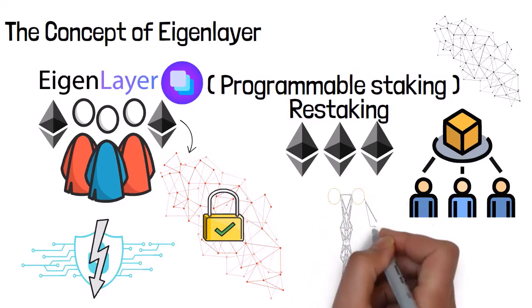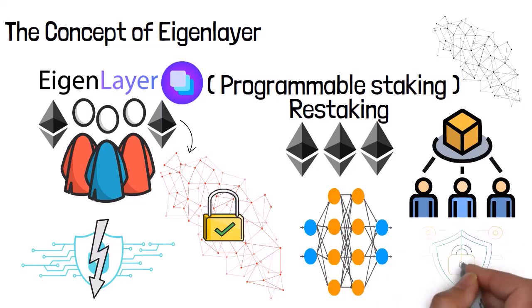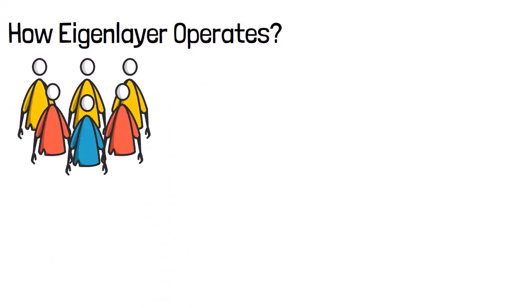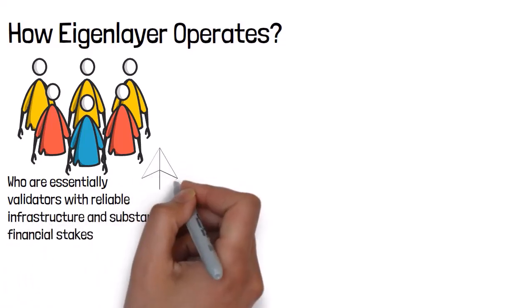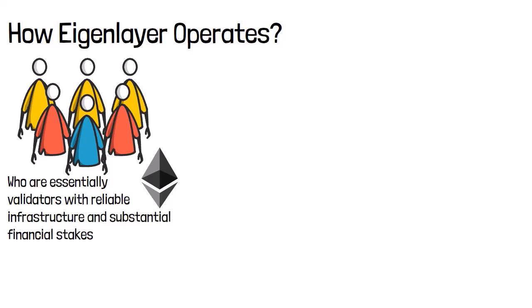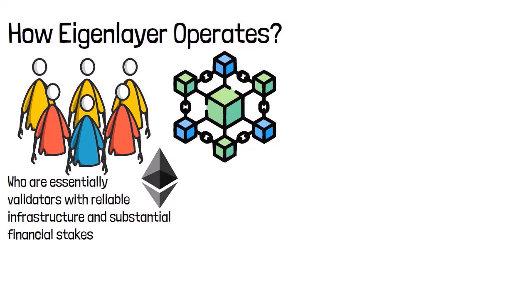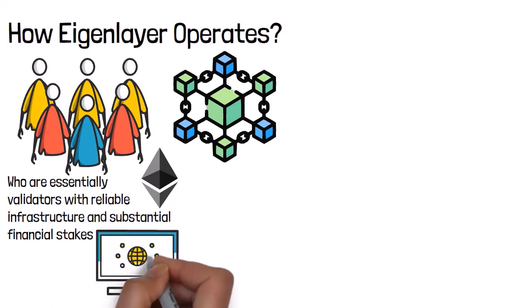By employing this method, EigenLayer aims to create a more resilient and interconnected ecosystem, leveraging the robust security foundation of Ethereum to bolster the integrity of smaller and emerging networks. EigenLayer operates through a network of operators — essentially validators with reliable infrastructure and substantial financial stakes — who are responsible for securing not only the Ethereum network, but also additional blockchains and decentralized services.